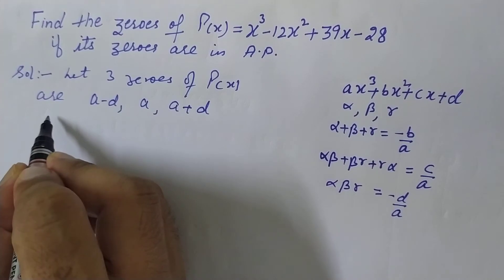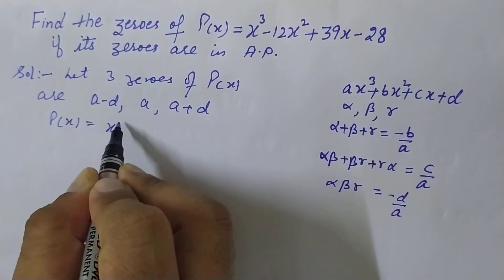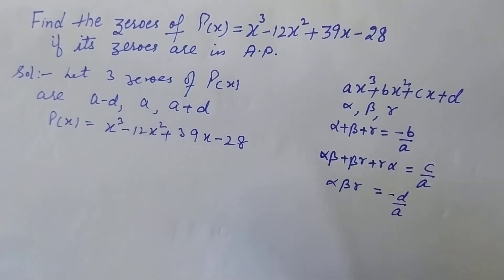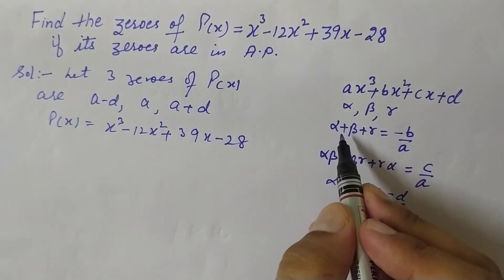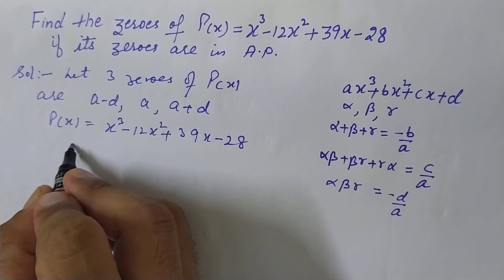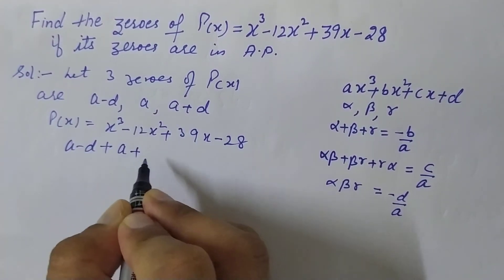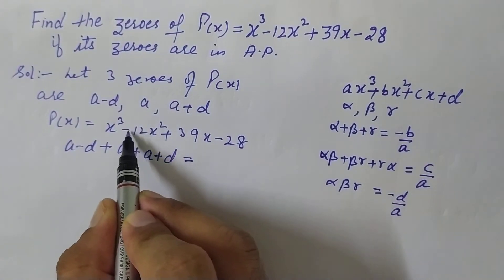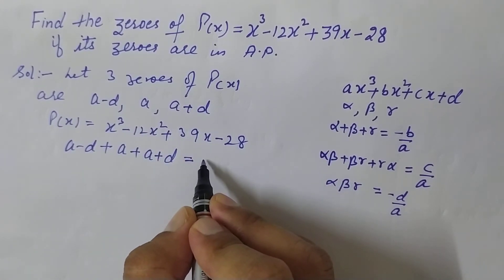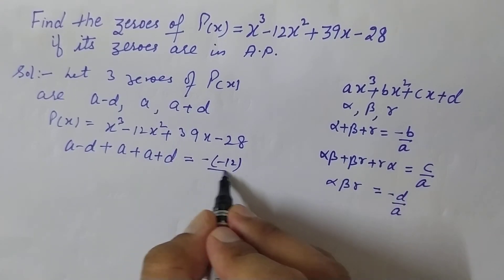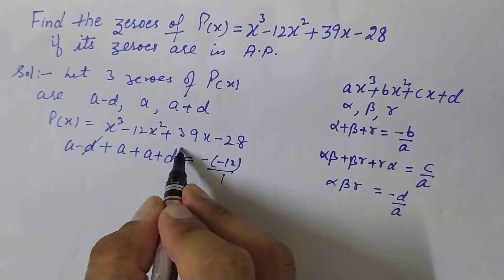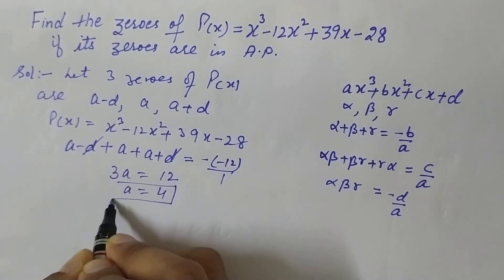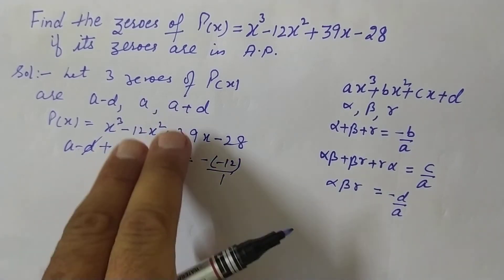Now this polynomial is with us: P(x) = x³ - 12x² + 39x - 28. These three zeros are in AP. So now we will take the sum of all these zeros. What is the sum? (a-d) + a + (a+d). Sum of these three zeros equals -b/a. Here b is -12, so -b is -(-12) = 12 over a. a is 1 here, coefficient of x³ is 1. From here, d is cancelled. So 3a = 12 and a = 4. So a is 4.